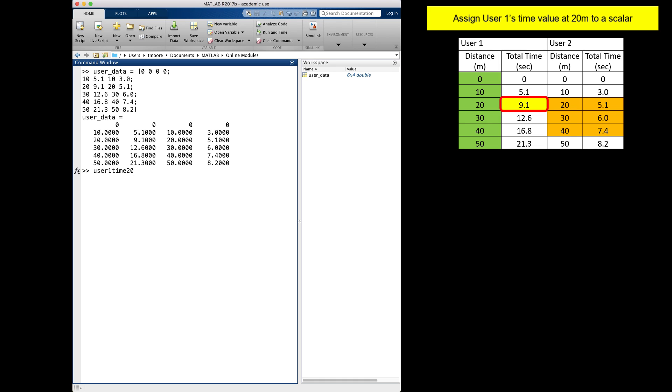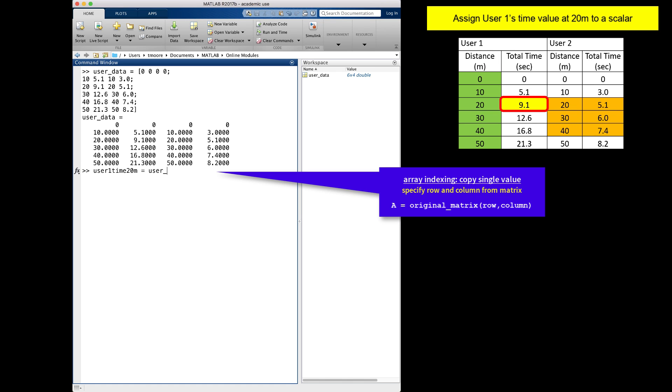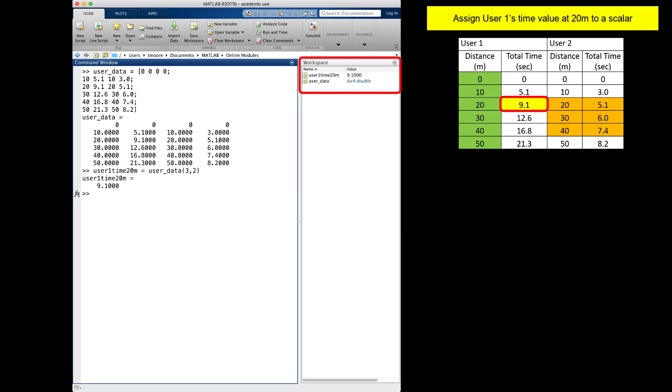As with all new variable assignments, my new variable name goes to the left of the equal sign. Then I use array indexing to copy the value 9.1, which is in the third row, second column, to my new variable. Notice that the user1time20m variable now exists in the workspace with the value of 9.1.